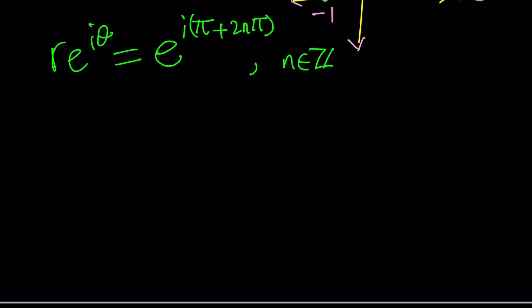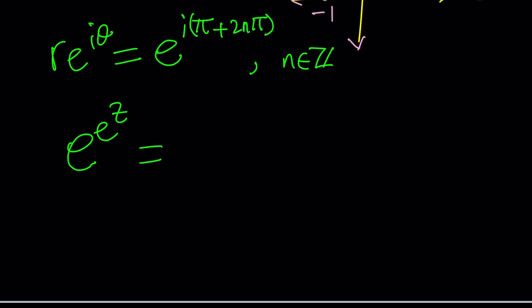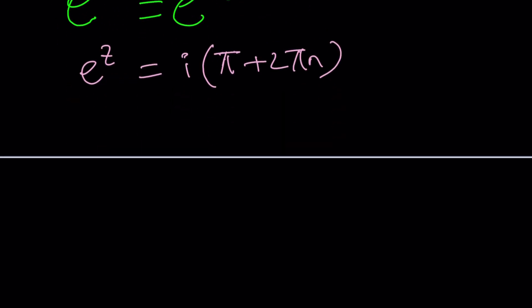So where do you go from here? E to the e to the z equals e to the power i times pi plus 2 pi n, or 2 n pi. It doesn't matter, same thing. Now we have e on both sides, so we can natural log. And that should give us e to the z equals i times pi plus 2 pi n. And again, to make it a little easier on yourself, you can go ahead and replace n with zero and just look at the principal value. We're going to handle this though.